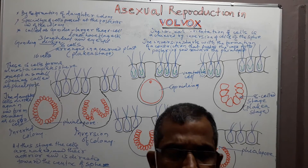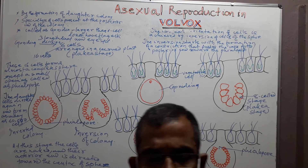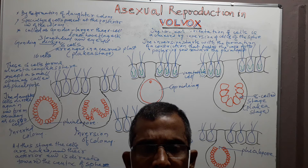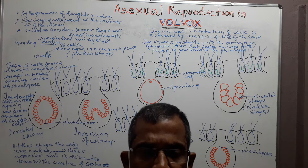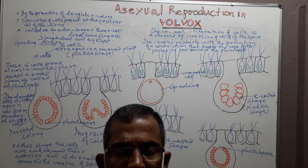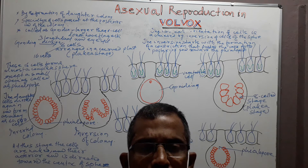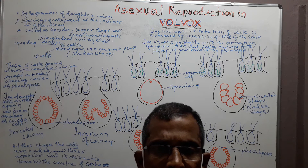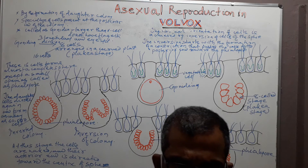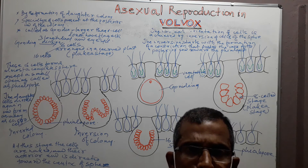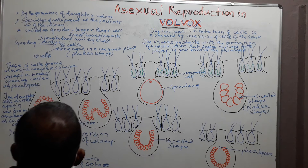Now we will discuss about Reproduction in Volvox. Volvox reproduces by Asexual Method and Sexual Method. Asexual Method occurs by the formation of daughter colony. Specialized cells present at the posterior end of the colony participate in Asexual Reproduction. These specialized cells, which are present at the posterior part of the colony, are known as Gonidia.